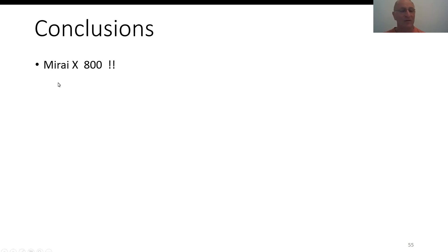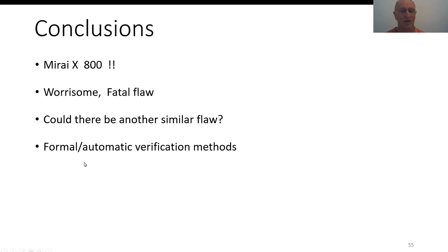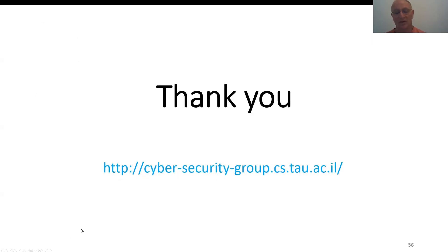In conclusion, if you remember the Mirai attack in 2016 took out several internet resources for many residents in the US — this attack is almost 1,000 times more powerful. This is very worrying. Could there be such a fatal flaw in the internet? Are there other such problems? Should we use formal automatic verification methods to verify the DNS, BGP, and other protocols critical for internet operation? We saw a trade-off between availability, response time, and the introduced vulnerability — those were the sources of the vulnerability. One may consider redesigning the DNS system for a more robust and highly available system without such flaws. Thank you very much for your attention. You may find more details about our project at the link provided.